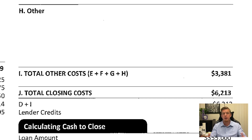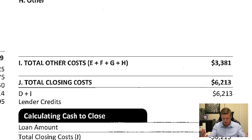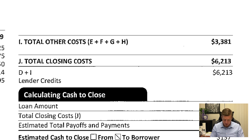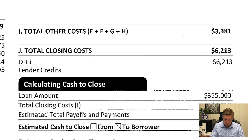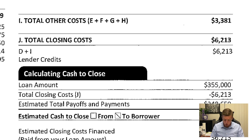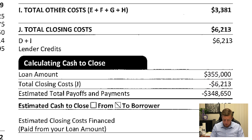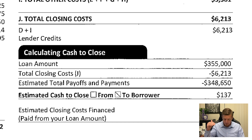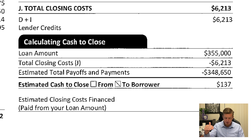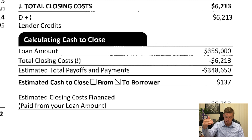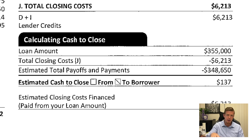Then you get down to Box J — it's the total costs of both sides. And in this example, calculating your cash to close, it'll show you the payoffs plus all these loan costs, and here's your new loan amount. That's how they arrived at that $137 back to you.